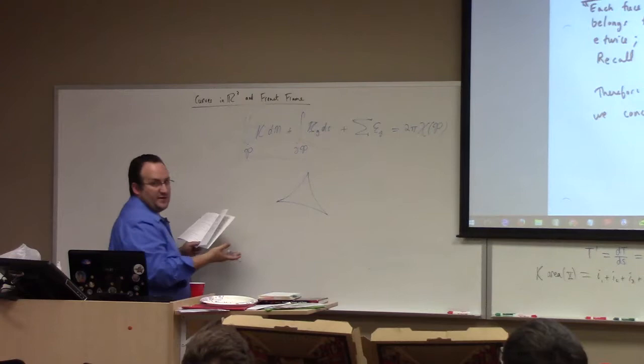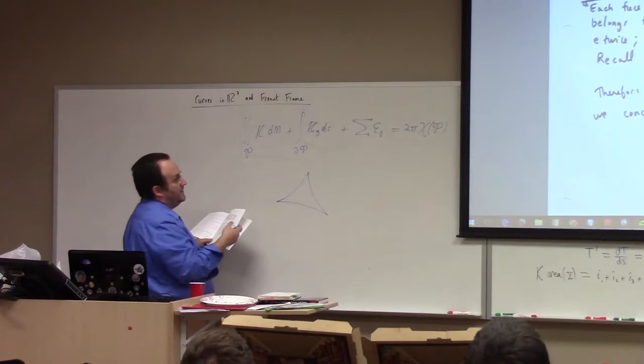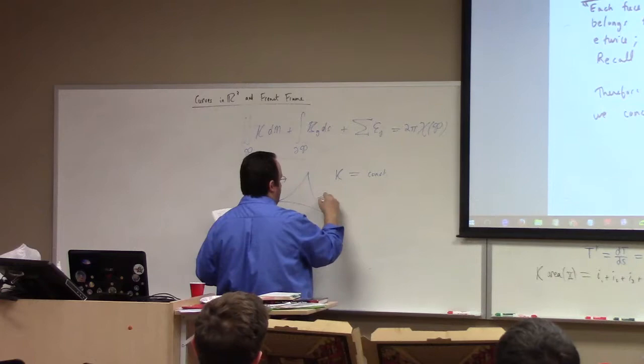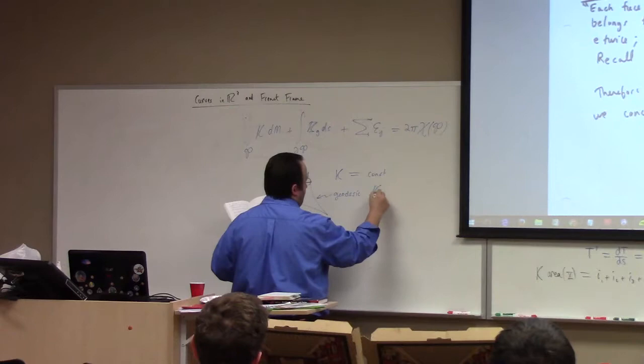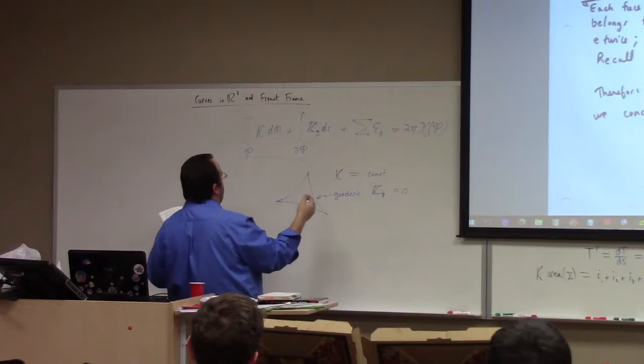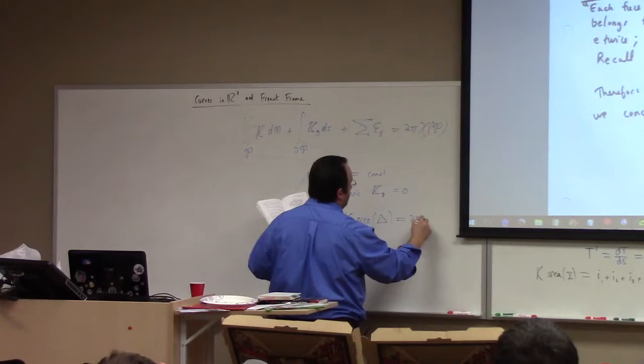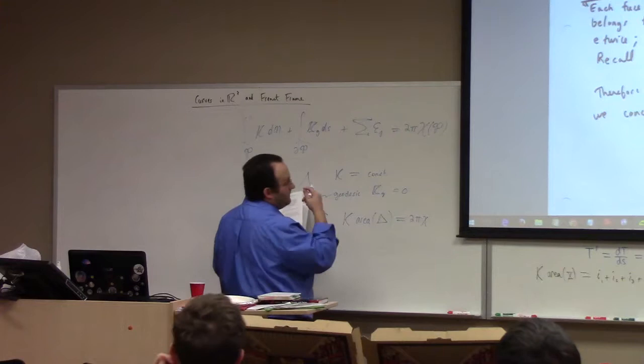If you take a triangle — a special kind of polygon — and take K to be constant, and take the edges to be geodesics (a geodesic triangle), which means the geodesic curvature is zero, then we get that the Gaussian curvature times the area of the triangle equals 2 pi times the Euler characteristic of a triangle.